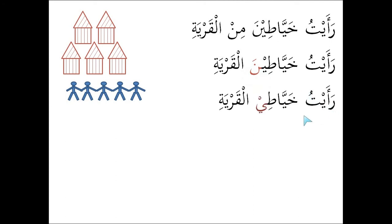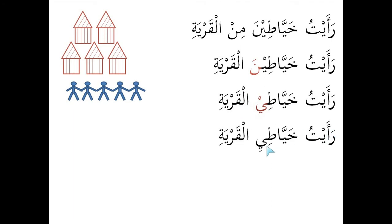Ra'aytu Khayyati Al-Qariya. The Ya has a Sukoon, and the Lam has a Sukoon, and it's difficult to say these two words together. So we just vowelize the Ya when we're reading it: Ra'aytu Khayyati Al-Qariya — I saw the tailors of the village.